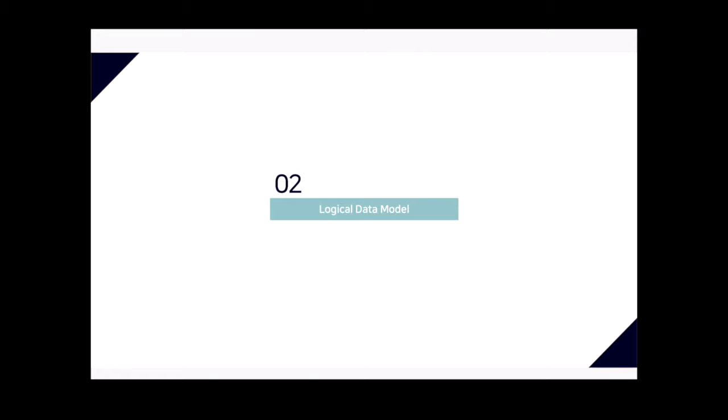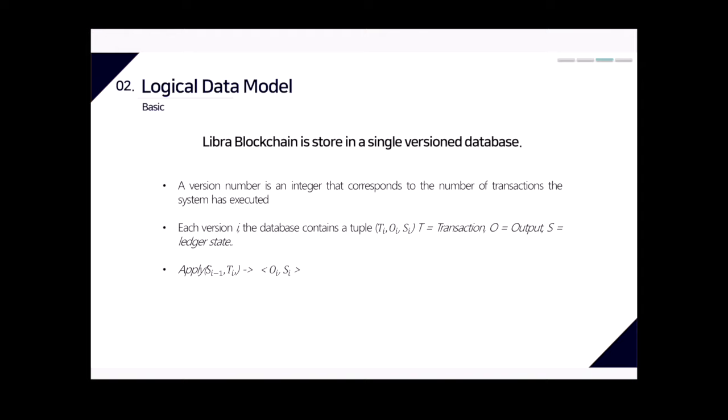I will now explain the components and flow of Libra. First is the logical data model. The logical data model organizes the decentralized database visible to validators and clients. The Libra blockchain is stored in a single versioned database.